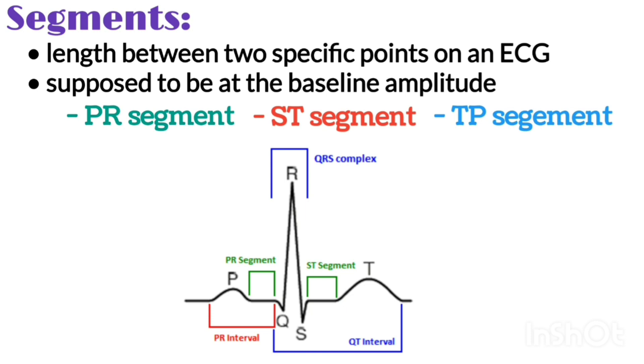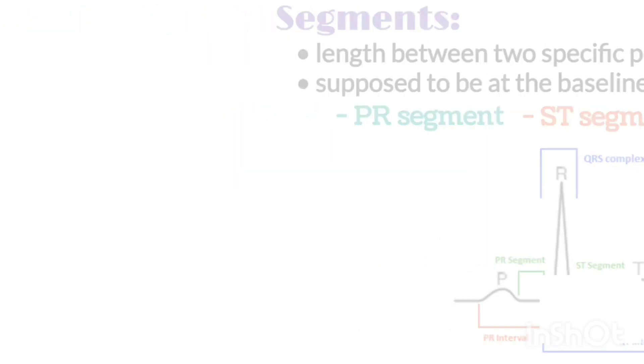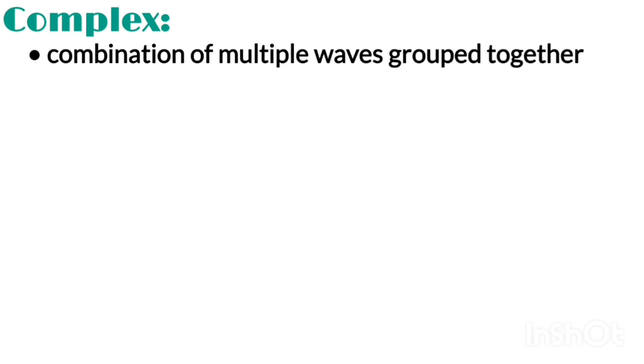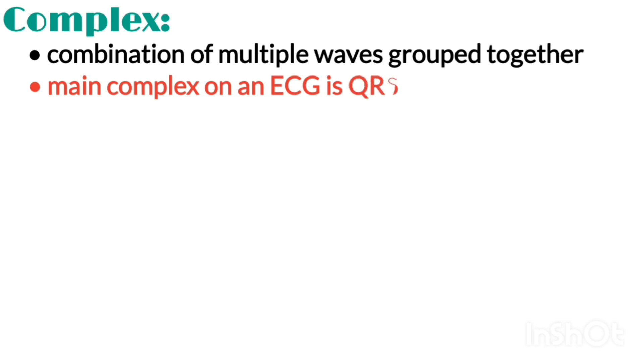Lastly, we are going to talk about complex. A complex is the combination of multiple waves grouped together. The only main complex on an ECG is the QRS complex.